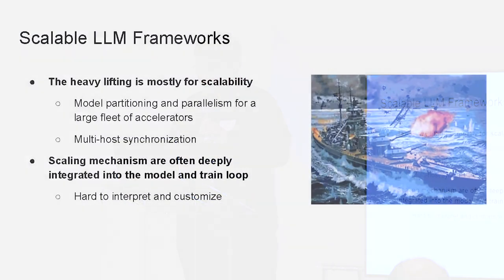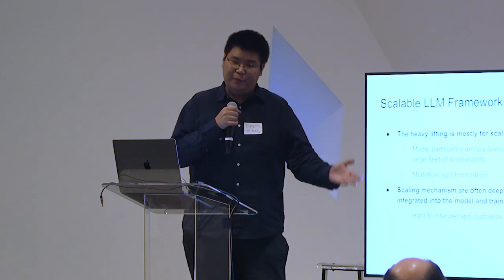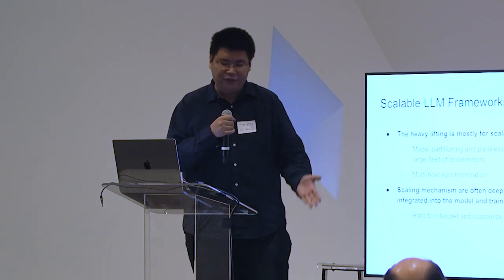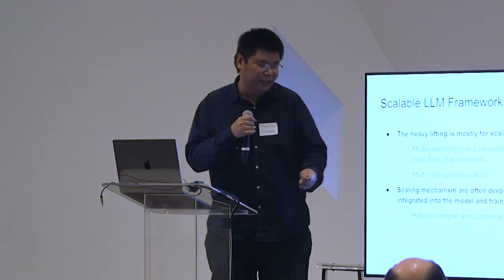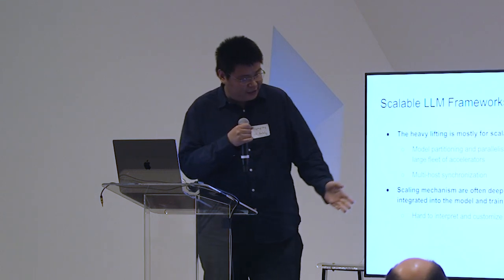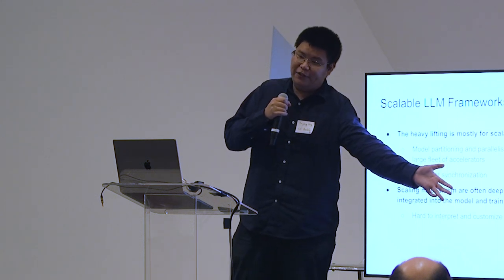So why do we still have these complicated language model frameworks? The heavy lifting is mostly for scalability. A minimal language model framework may be sufficient for a single GPU or a few GPUs on a single machine, but if you want to scale up training in the cloud on many different machines — on hundreds of GPUs or TPUs — it's very difficult. These scalable frameworks are built to handle that case. On the other hand, the scaling mechanisms are often deeply integrated into the model and training loop.